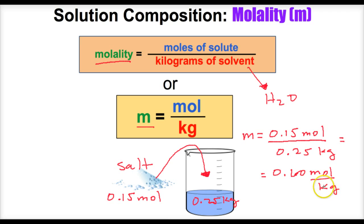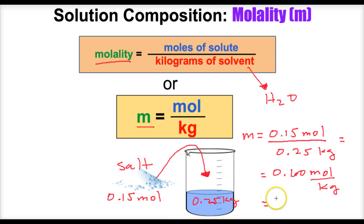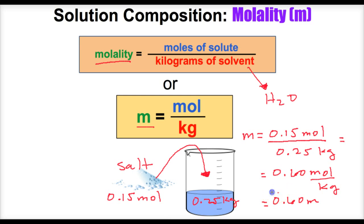This means for every one kilogram of solvent — or in other words, for every one kilogram of water — there will be 0.60 moles of this salt dissolved in it. Anytime we have this unit, moles per kilogram, it turns into a lowercase m, which stands for the molality of the solution. So we have a 0.60 molal solution of salt water.